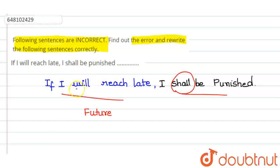But they have given the word will here. So, in this case, the will has to be removed. So, the correct sentence kya hai?